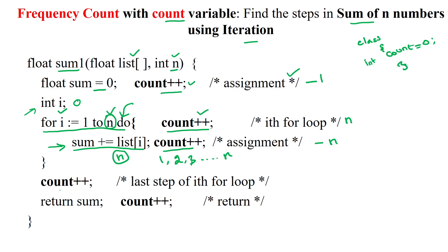Finally, n will exit at the n plus 1 value. When it is reaching n plus 1 greater than n, then it will exit from the loop. So for that we are incrementing the count variable for 1 time. Then finally, we are returning the value of this variable. So for the return statement, it will consume 1 unit of time, so it is incremented by 1.